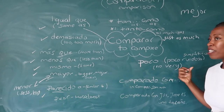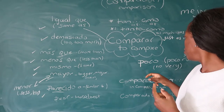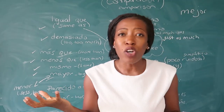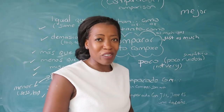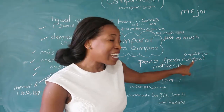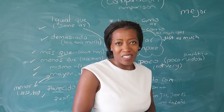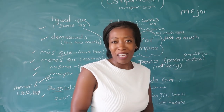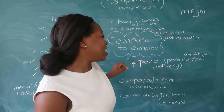Moving on — poco, which you've seen. Poco means 'little,' but here it means 'not very.' For example: es poco ruidoso — it's not very noisy; es poco simpático — it's not very nice. When you put poco next to an adjective you get 'not very' plus that adjective: es poco amigable — it's not very friendly. I love this one, I think it's a lot of fun.